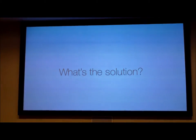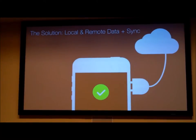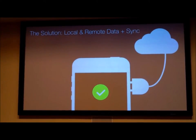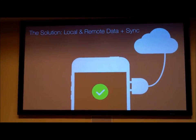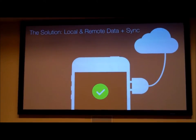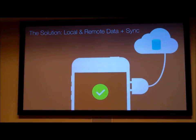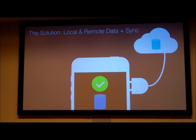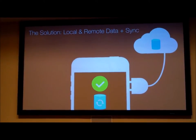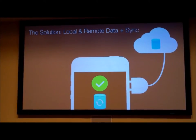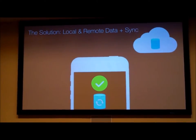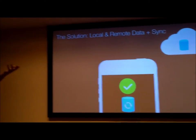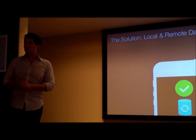What's the solution? The solution is local and remote data plus synchronization. You have data in the cloud, but you also have data on the client. You have synchronization to reconcile the differences between your data stores. So now when the network connection goes away or degrades, you still have an application with consistent performance and consistent availability.